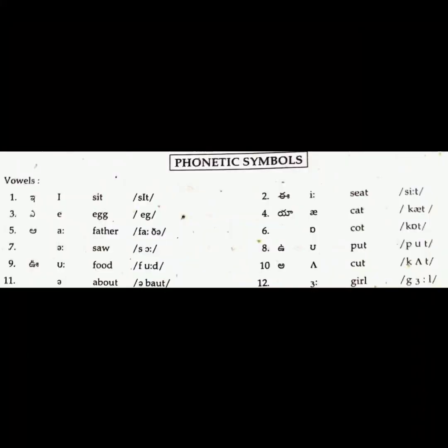Here, observe I in sit. It is pronounced as E. Second one, observe the word seat. Here, observe the word seat. The letter E-A is pronounced as long E sound. Come to the third one. Observe E in egg. Here, E is pronounced as A. Come to the fourth one. Here, observe cat.